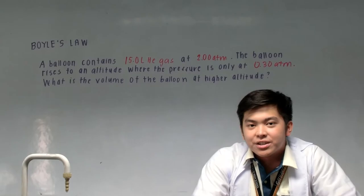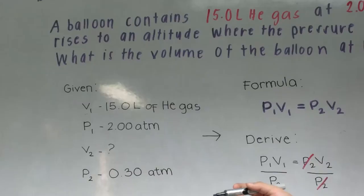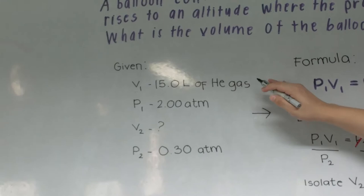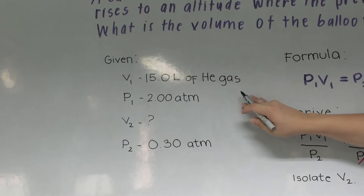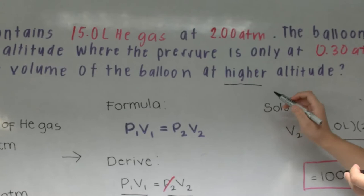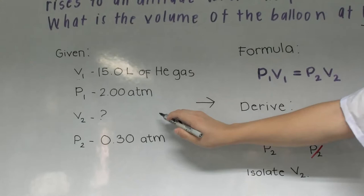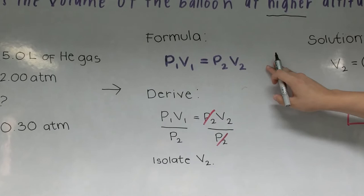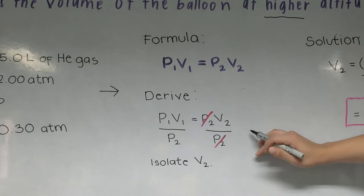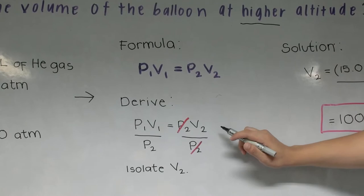To compute, we have to lay out what we already know. The initial volume, V1, is given as 15.0 liters of helium gas. The initial pressure, P1, is given as 2.00 atm. As its altitude is increased, the final pressure, P2, is given as 0.30 atm. Now, to find the final volume V2, we substitute into the given relationship formula. The formula is P1·V1 = P2·V2, which is equivalent to Boyle's Law. We isolate V2, giving us V2 = P1·V1 / P2. Substituting, the answer is 100 liters of helium gas.